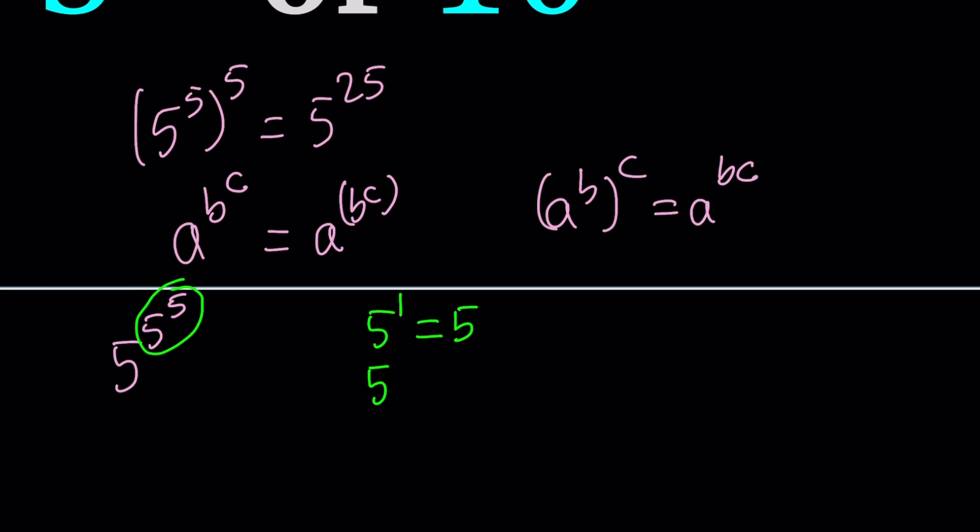Let's just write them down. 5 to the 1st power is 5 itself. 5 to the 2nd power is 5 times 5, which is 25. And then 5 to the 3rd power can be written as 5 times 5 times 5 or 5 to the 2nd times 5, which is 125.